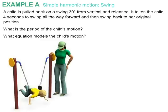Here's our first example. We're going to deal with a child who is pulled back on a swing 30 degrees from vertical and then released. We are told that it takes the child four seconds to swing all the way in one direction and then back to her original position. The question, what is the period of the child's motion? And what equation models the child's motion?